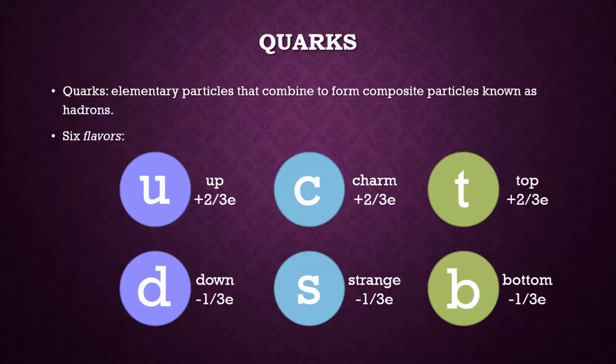There are many other properties of particles. One very obvious one is mass. Although charm quarks have the same charge as up quarks, they're more massive. And top quarks are more massive still.